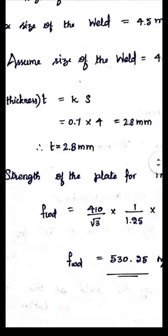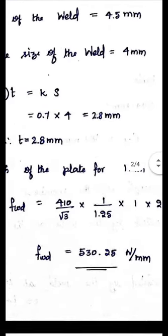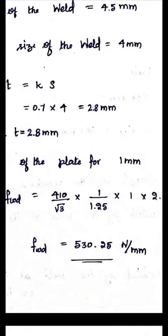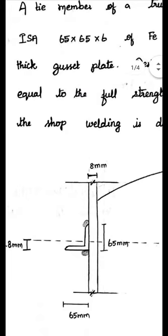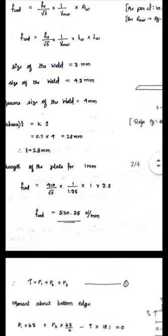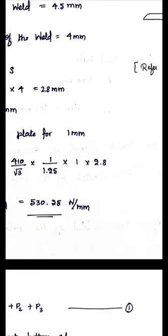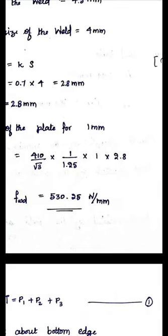Substituting values into the strength equation: FWD = FU / √3 × (1/γmw) × Aw. FU is the ultimate tensile strength — for Fe 410 grade, FU = 410 MPa. Since fabrication is done by shop welding, γmw = 1.25. With length = 1 mm and throat thickness = 2.8 mm, the strength of the weld per 1 mm length works out to 530.24 N/mm.